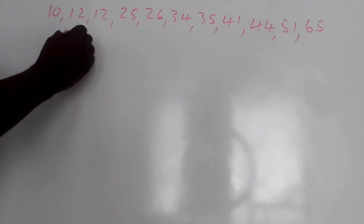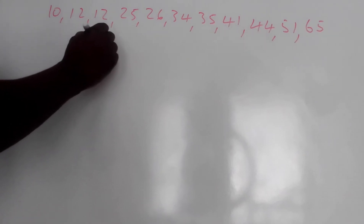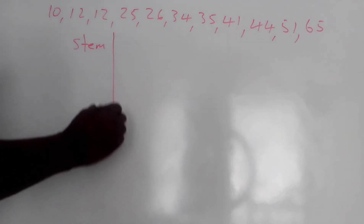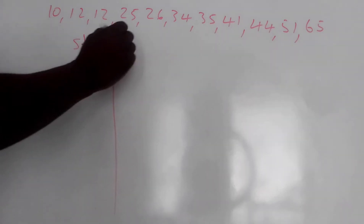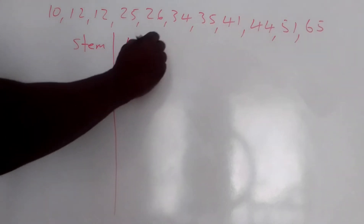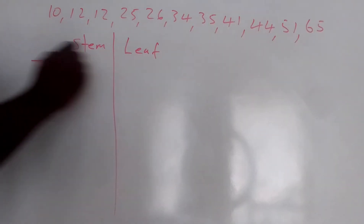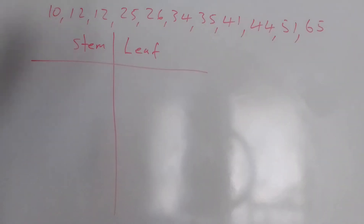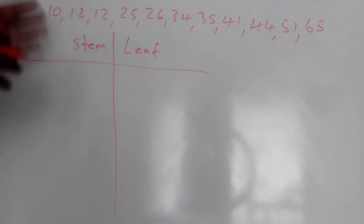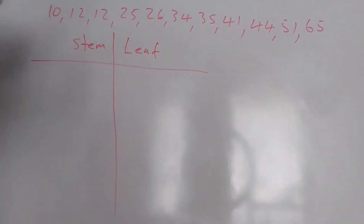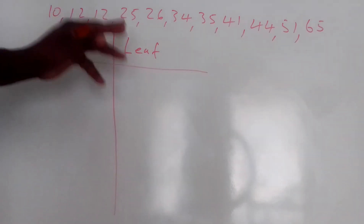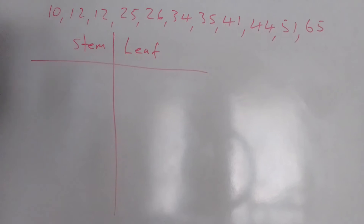What I need to know: the stem is where I am going to put all my tens values, while the leaf is where I am going to put all my ones values. Under the stem I put the tens digit; under the leaf, I put the ones digit.